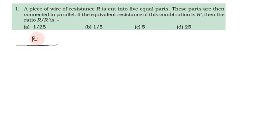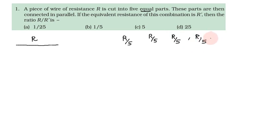The wire is cut into 5 equal parts, so each part has resistance R by 5. If the wire is split into 5 parts, each part's resistance is R/5. These parts are then connected in parallel.